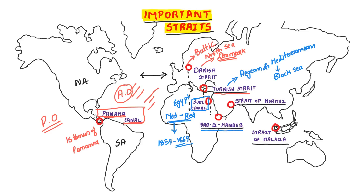Next is Bab el-Mandeb. This is connected to the Red Sea and the Gulf of Aden. Bab el-Mandeb is located in Yemen. It connects the Red Sea and the Gulf of Aden.